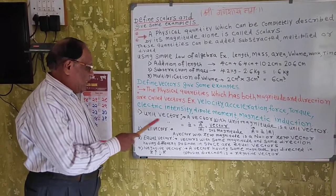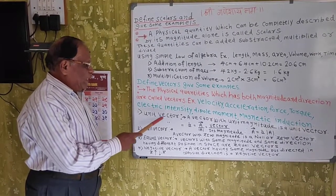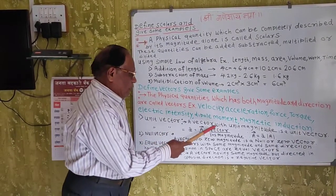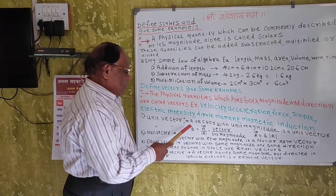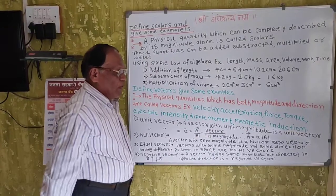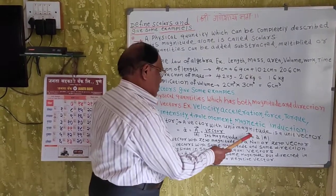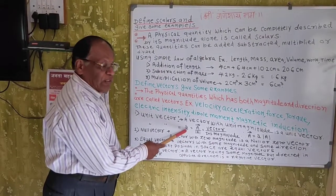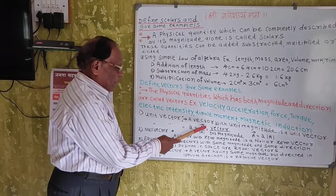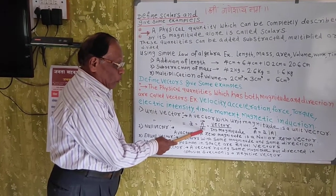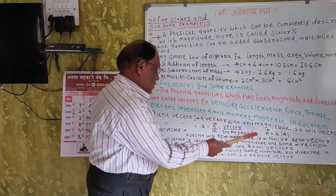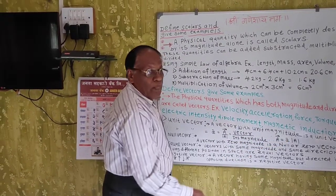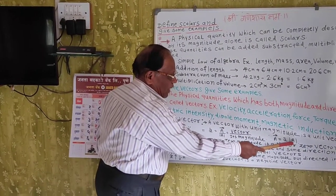Now we are going to study unit vectors. A unit vector is defined as a vector with unit magnitude. The formula of a unit vector is equal to a vector divided by its magnitude. Therefore, a vector is always equal to a unit vector multiplied by its magnitude.